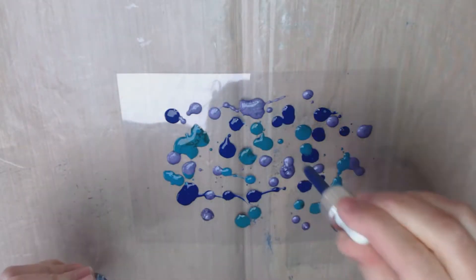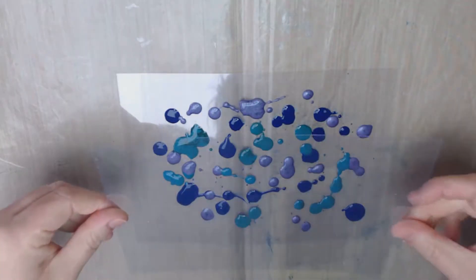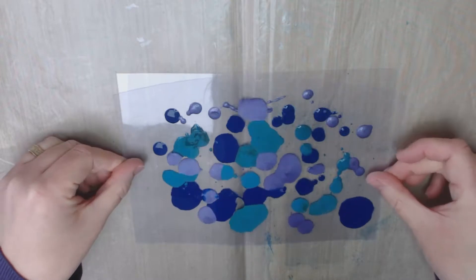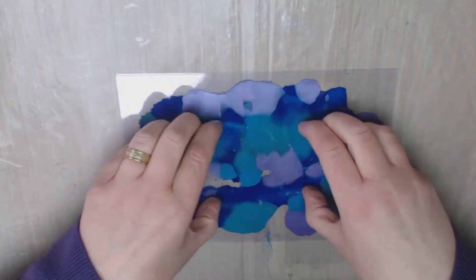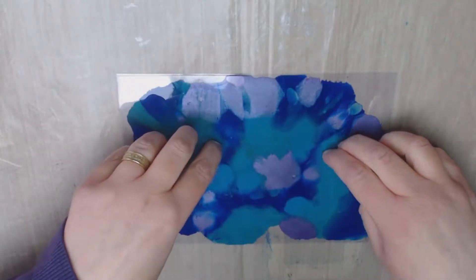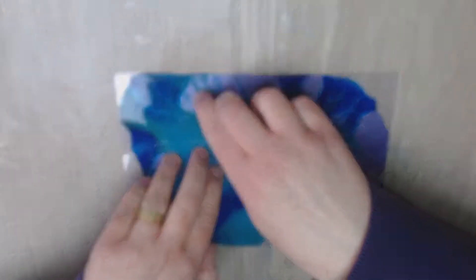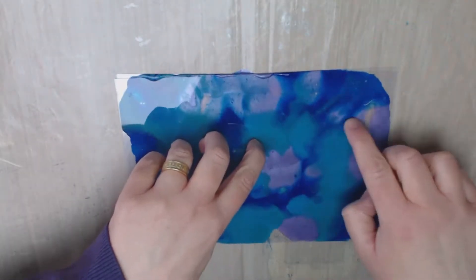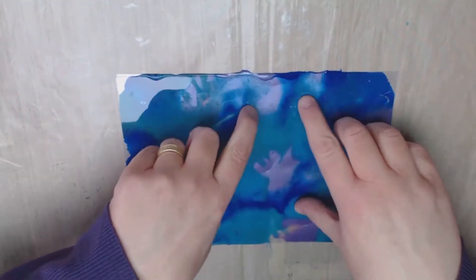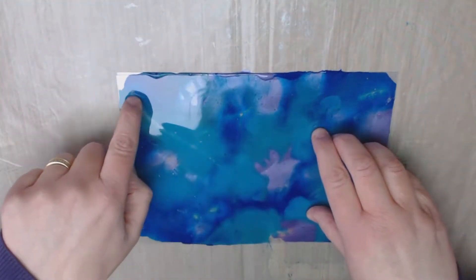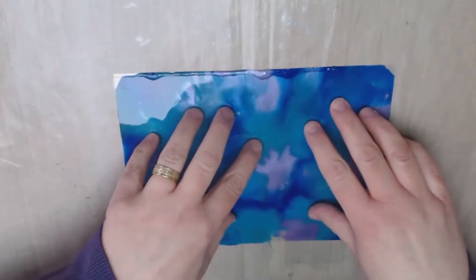I saw this technique on TV. John Lockwood was doing it, so I thought I'd give it a go. I'm just placing another piece of acetate over the top and moving the inks around. A really simple technique. It's quite addictive.